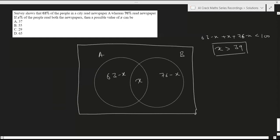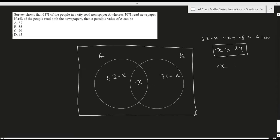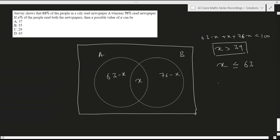So there can be a case where X can be 63, right, because there can be a case where no one is reading only newspaper A. It might be possible they are reading either both or they are reading only B. If you make X equals to 66, in that case this percentage becomes negative which is not possible. So the maximum value X can have is 63. So we get that X should be less than or equal to 63.